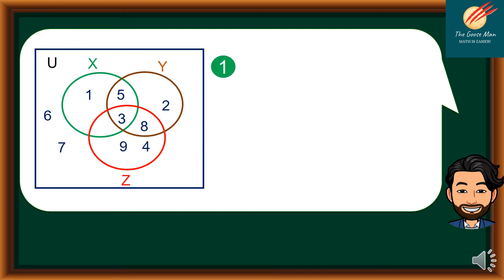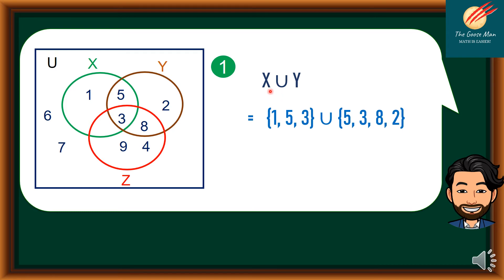The diagram on the left side is a Venn diagram — an illustration of set operations. We have set X on the green circle, Y on the brown circle, and Z on the red circle. For X union Y — combining all elements in X with all elements in Y — X has {1, 5, 3} while Y has {5, 3, 8, 2}. So X union Y is equal to {1, 5, 3, 8, 2}.